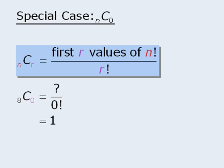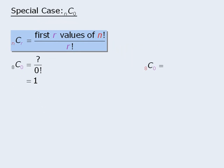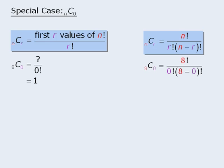Now if that explanation feels inadequate, let's evaluate 8 choose 0 using the original formula. So we'll replace n and r with 8 and 0 to get the following. And from here, we can simplify this to get 8 factorial over 0 factorial times 8 factorial.